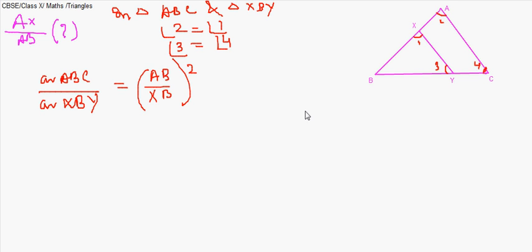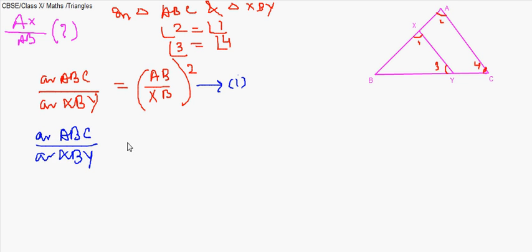Once similarity is proved, from the theorem we can write: area of ABC by area of XBY equals (AB/XB)². Also, since XY divides the bigger triangle into two equal areas, area of ABC by area of XBY equals 2 to 1.